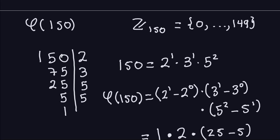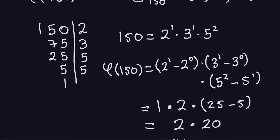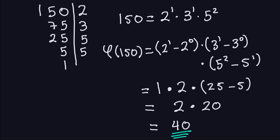Doing this with the definition — checking every single number — would take a very long time. But because we have the canonical factorization and the theorem, it doesn't take much time at all. So phi of 150 equals 40. This theorem works as long as you know the factorization of the number. If the number is huge and you can't factor it, the theorem won't help. But for small numbers we can do this easily. I hope you understand this function well, because we're going to use it later in the RSA method. I'll see you in the next video.